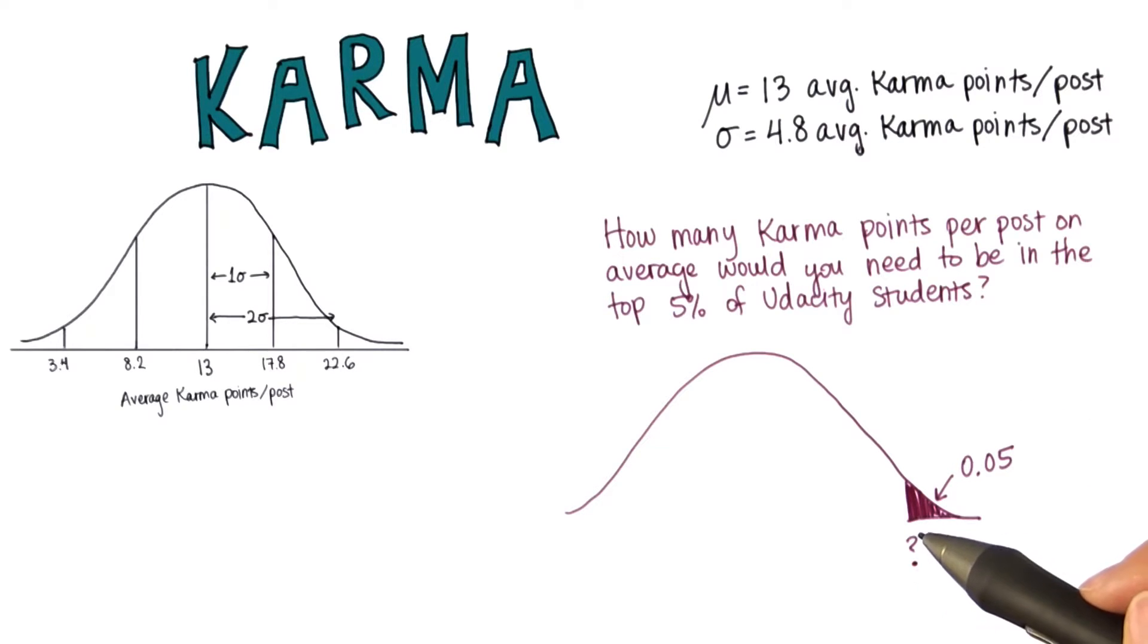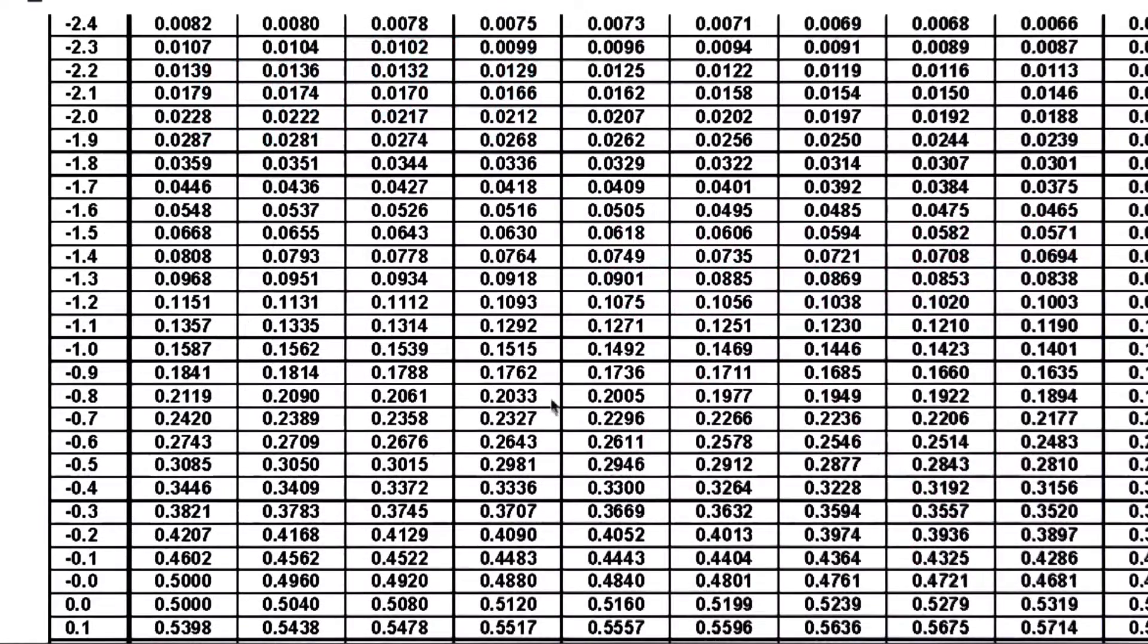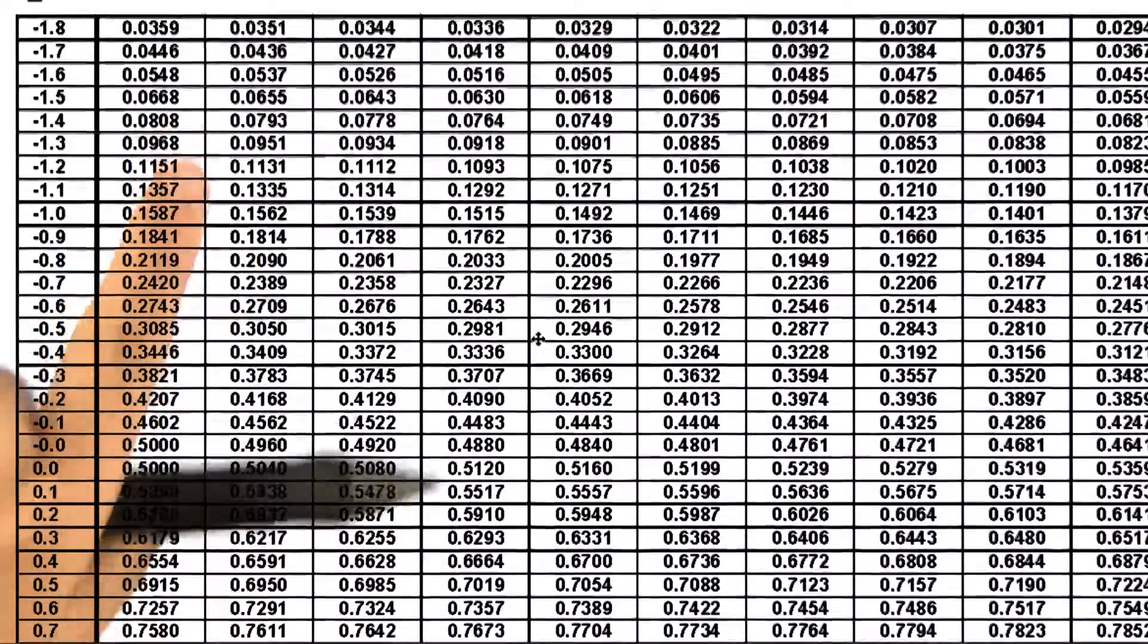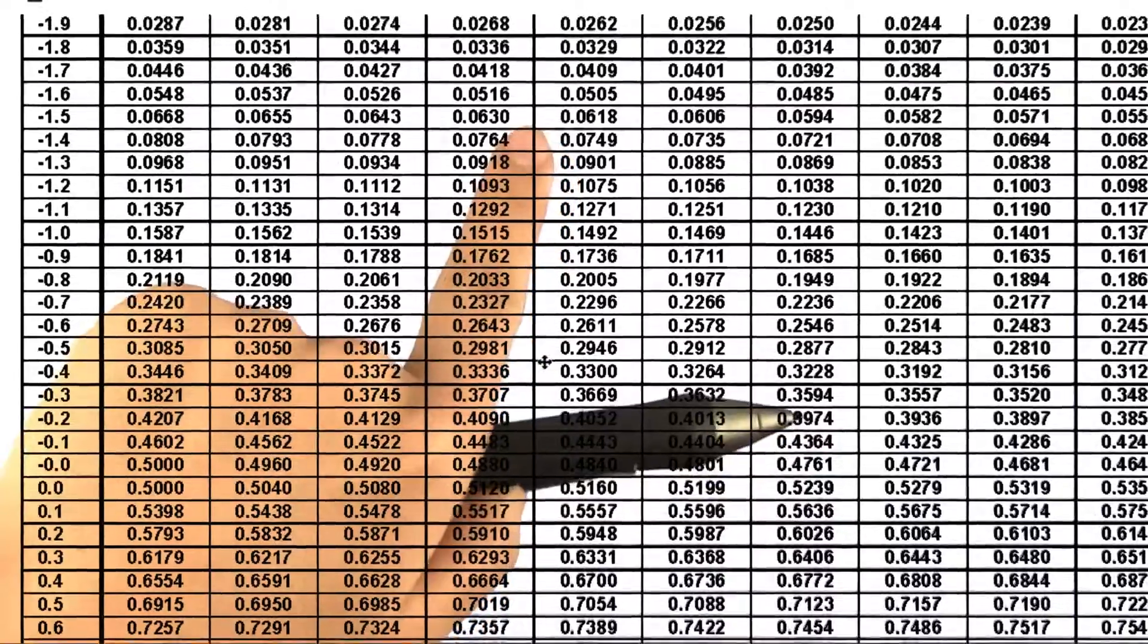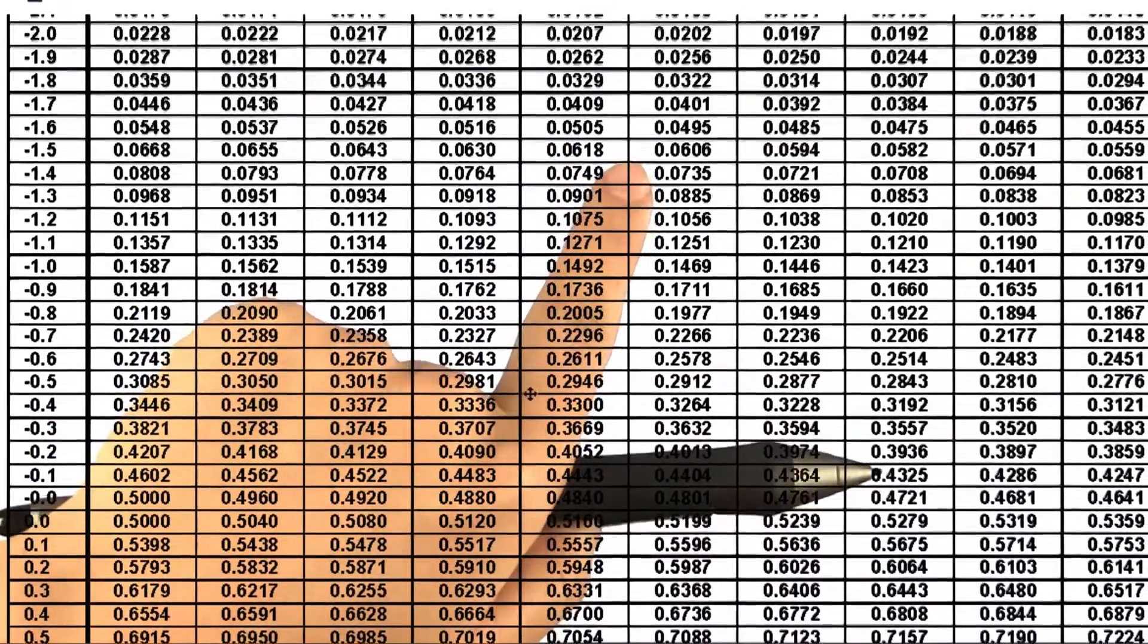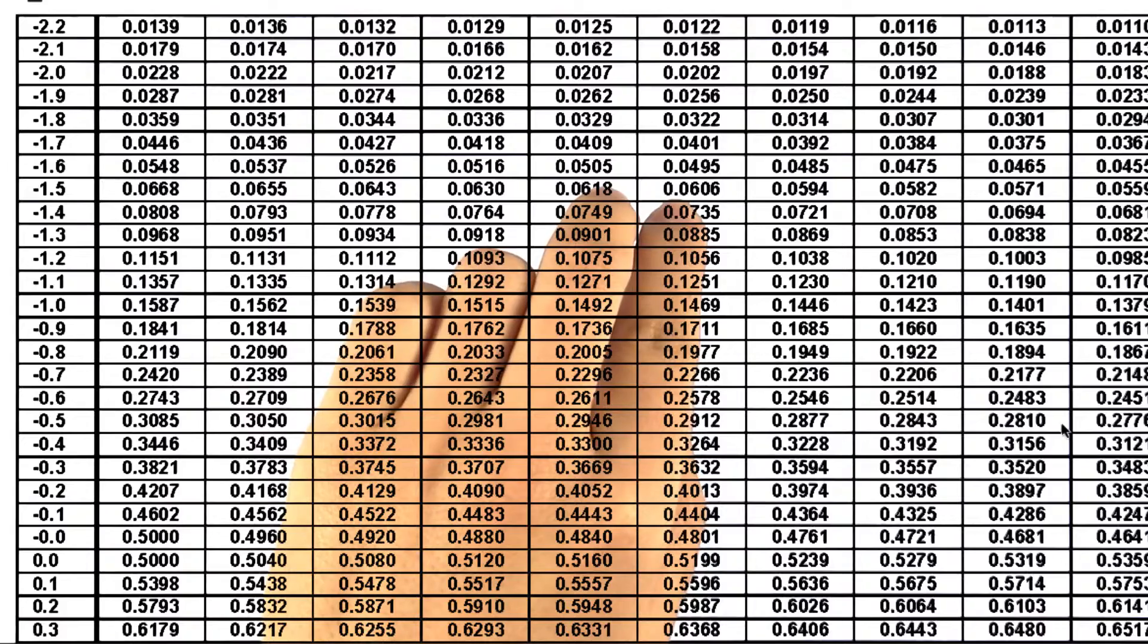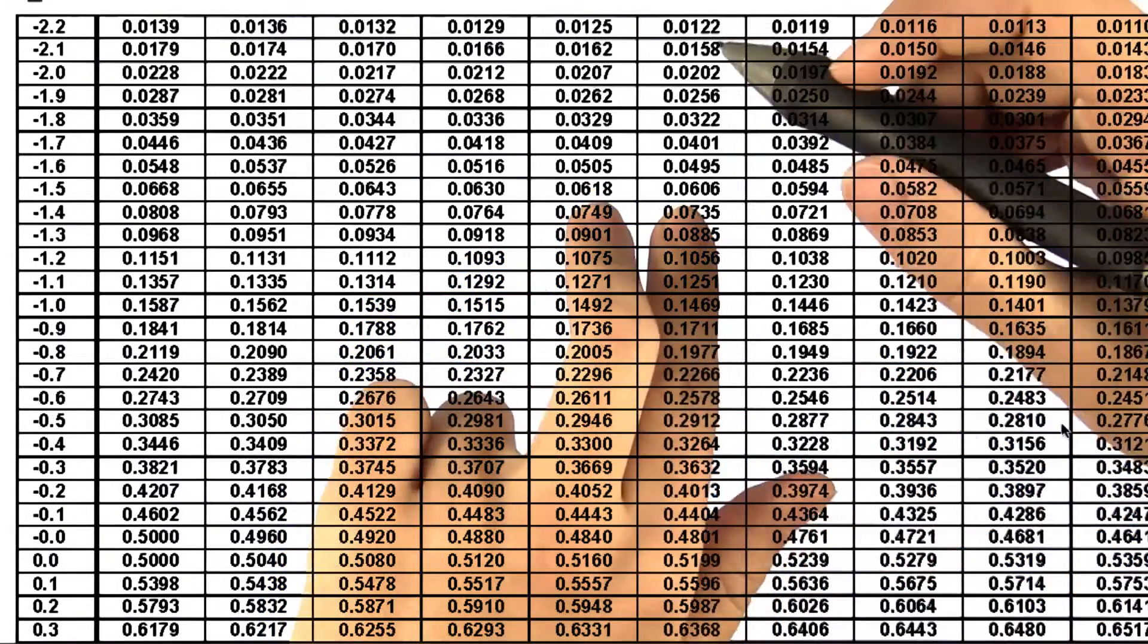Well first, what z-score should go here? We'll use the z-table to figure that out. This time we're going to look in the center of the z-table, and we're looking for 0.05. Here we have 0.0505 and 0.0495. That corresponds to a z-score of negative 1.64 and negative 1.65.